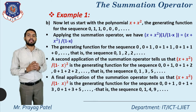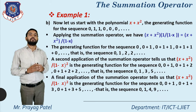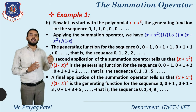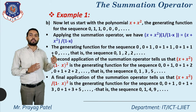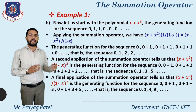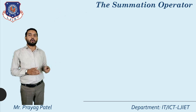A final application of the summation operator tells us that (x + x²)/(1-x)³ is the generating function for the sequence 0, 0+1, 0+1+3, 0+1+3+5, ... which is 0, 1, 4, 9. This is the common form for the summation operator.